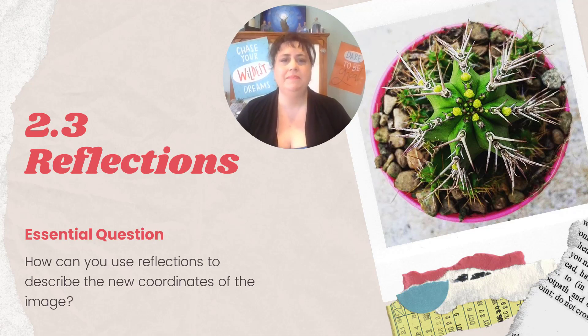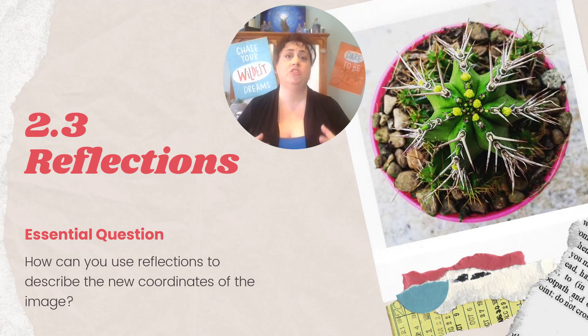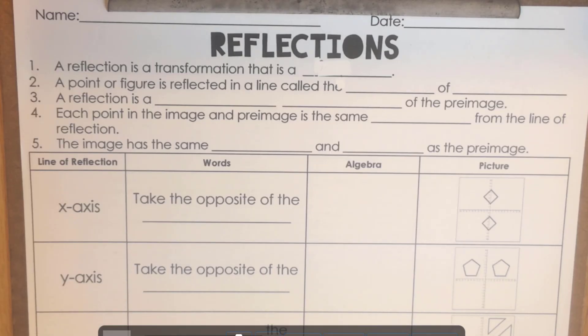Hi, and welcome to Meetings in Math. You are here for reflections, which is another kind of transformation. Our essential question today is how can you use reflections to describe new coordinates of the image? Image is just the new figure that you make. Today you are going to need something to write with, but especially your pencil, your Jaguar jots — it should say 2.3 at the top — and reflections. And always bring your growth mindset with perseverance and some self-confidence.